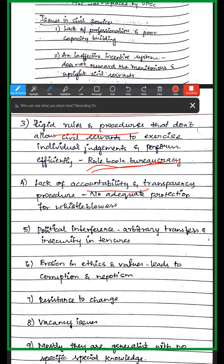Civil servants' work lacks transparency, and whistleblower protection is inadequate. Political interference is a major issue — civil servants may be influenced by political parties, and there are chances of arbitrary transfers, making civil servants feel insecure. This political interference undermines civil service functioning. There is also erosion in ethics and values, leading to corruption and nepotism.